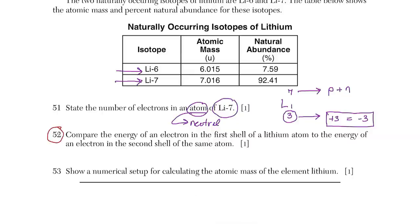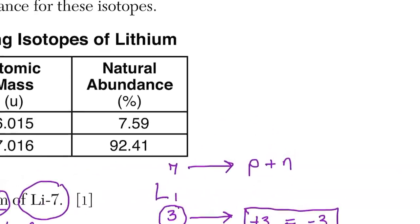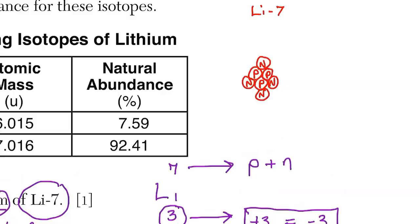Number 52: compare the energy of an electron in the first shell of a lithium atom to the energy of an electron in the second shell. Using the Bohr model, we draw the nucleus with 3 protons — each positive 1. For lithium-7, we have 3 protons and 4 neutrons, since 4 plus 3 equals 7, and neutrons and protons have the same mass.